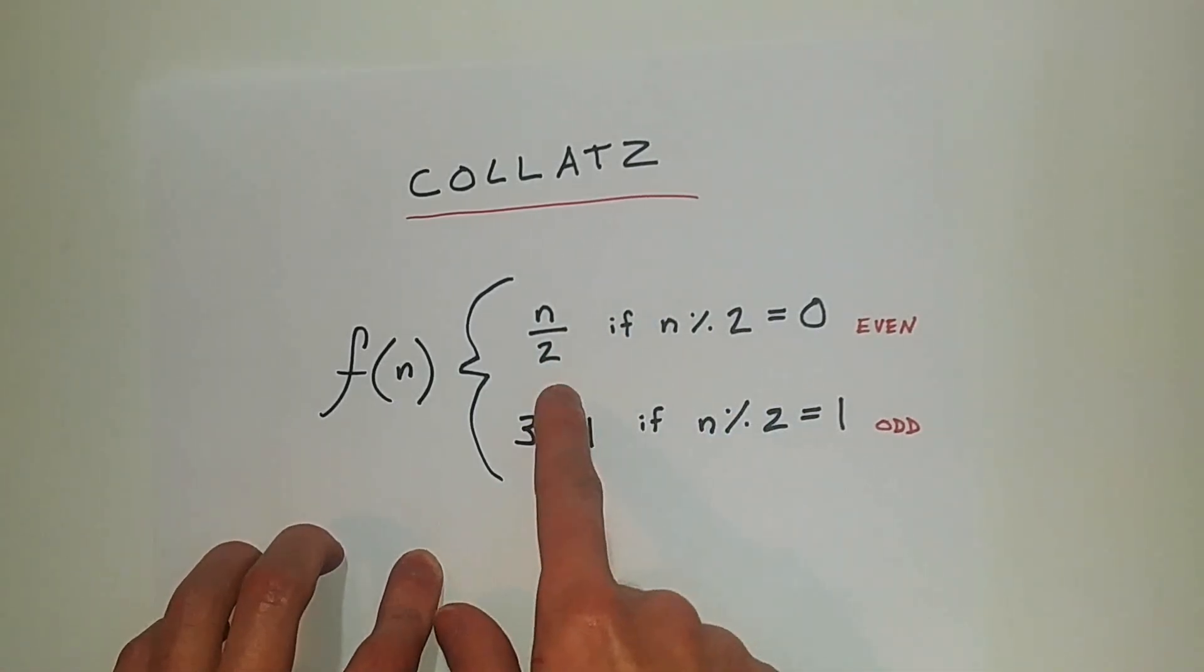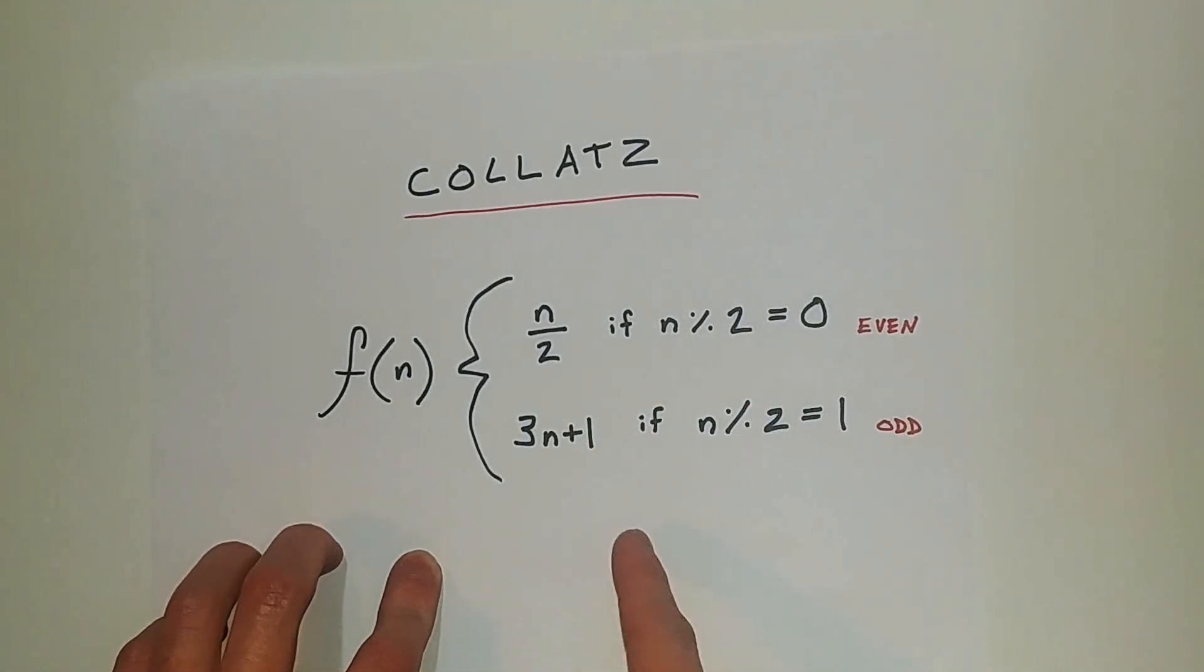So if n is even, we divide it by 2. If n is odd, we multiply it by 3 and add 1. And the Collatz conjecture is that if we keep doing this process, we'll eventually get to 1 for all positive integers.